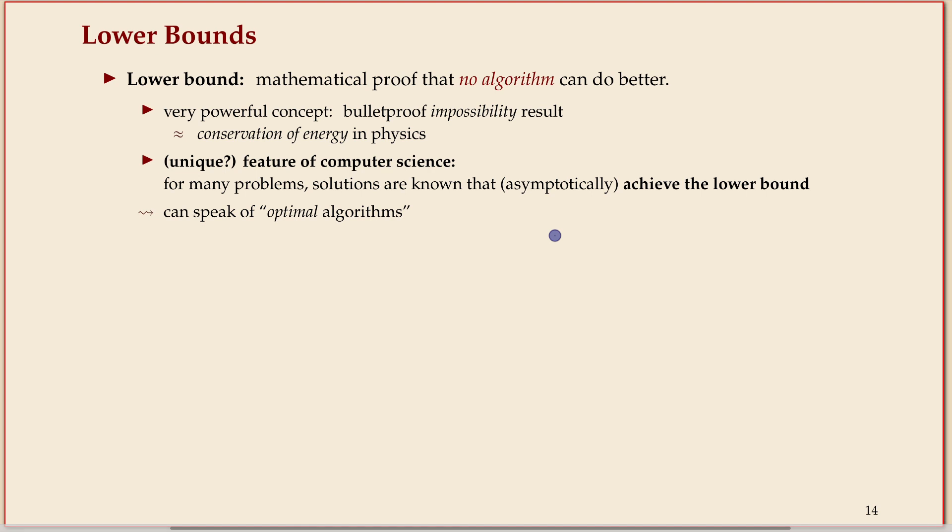A lower bound in algorithms is usually a synonym for an impossibility result. There's no algorithm that can do better than a certain performance, and it has to be mathematically proven. So it must be a rigorous statement.